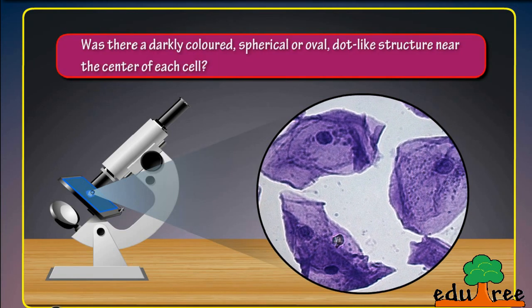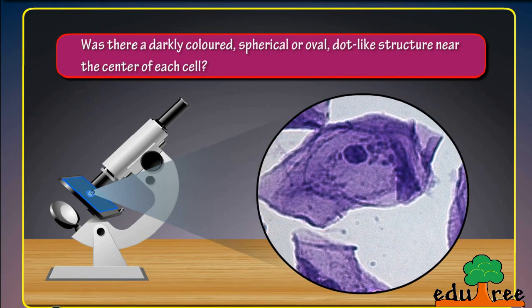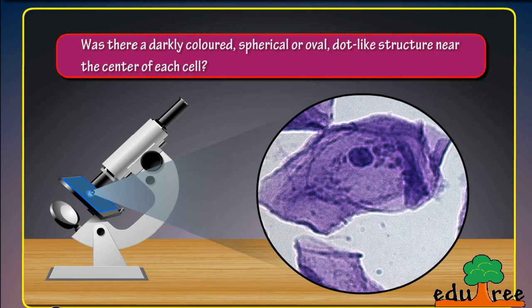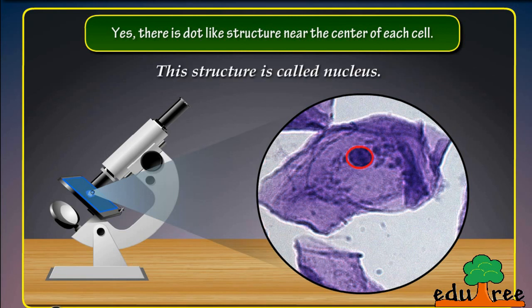Was there a darkly colored, spherical or oval, dot-like structure near the center of each cell? Yes, there is a dot-like structure near the center of each cell. This structure is called nucleus.